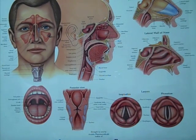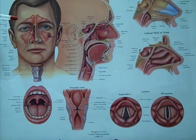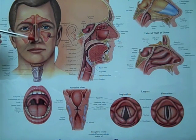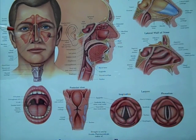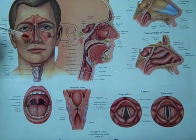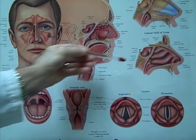Upper airway tissue obstruction can occur from a deviated nasal septum, which is the cartilage that runs up and down the middle of the nose, or enlargement or hypertrophy of the turbinates, which are the ridges that occur within the nose.